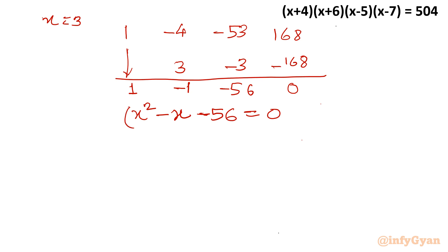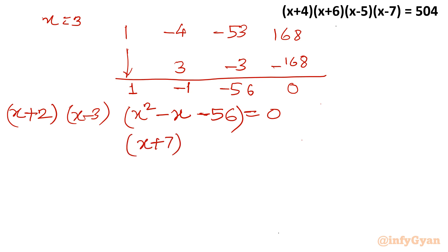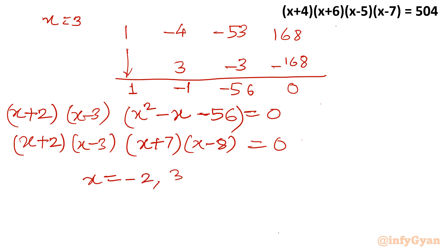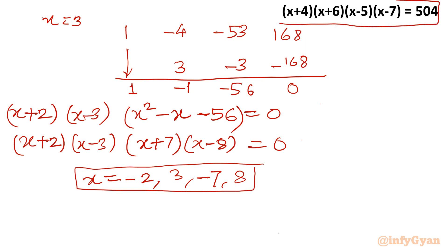Applying the quadratic formula to x²-x-56 = 0, we get the factors (x+7)(x-8). So the complete factorization gives x = -2, 3, -7, and 8 as our solutions — the same as Method 1. You can verify by substituting any x value into the original equation. I hope you liked this video. Thank you so much for watching. Please like, share, and subscribe.